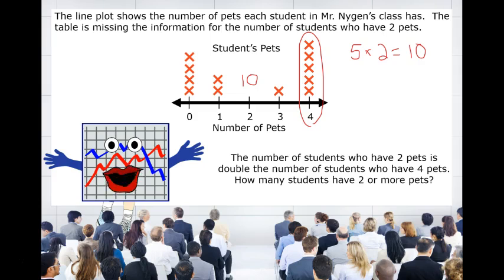Next, we want to add how many people have two, three, or four pets. So we would add 10 plus 1 plus 5. We get a total of 16 students.